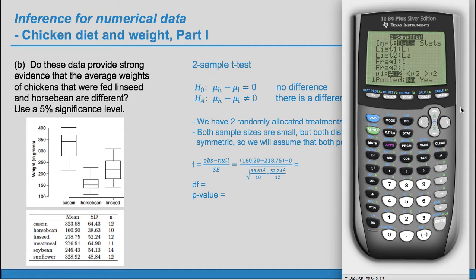We don't have all the data. We have the summary stats, so we'll go over to stats and hit enter. X bar one, the first one, is 160.2. And the second one, or that S sub one, is 38.63. Okay. N1 is 10. And then similarly for the second one, we have an average of 218.75, a standard deviation of 52.24, and a sample size of 12.